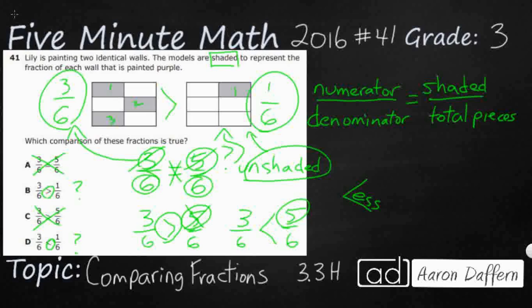So our answer is not going to be D. 3 sixths is not less than 1 sixth. It is greater. The answer is B.